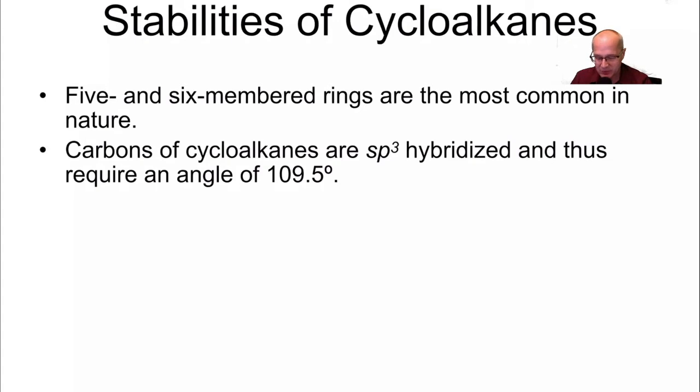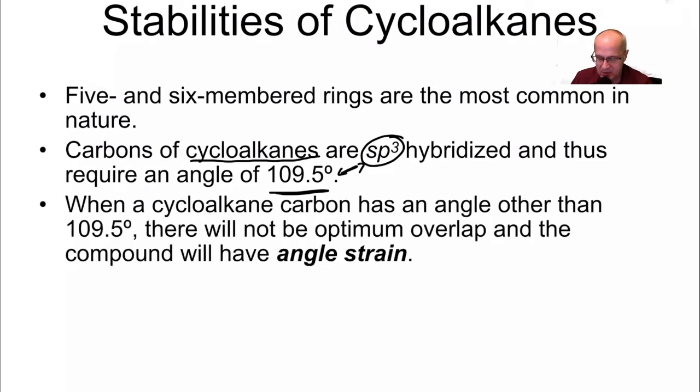Carbons of alkanes, of course, are sp3 hybridized and they love that bond angle right there. Carbon loves that bond angle. Keep that in mind. 109.5 degrees, if it's sp3 hybridized, they kind of go hand in hand. When a cycloalkane has an angle other than 109.5 degrees, it will not be optimum. It'll have poor overlap and that is what is called angle strain.